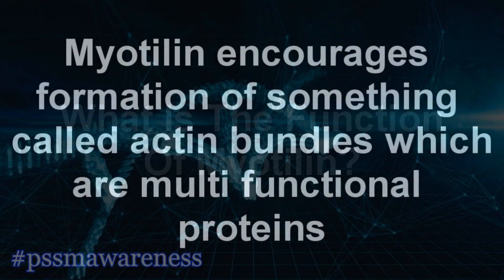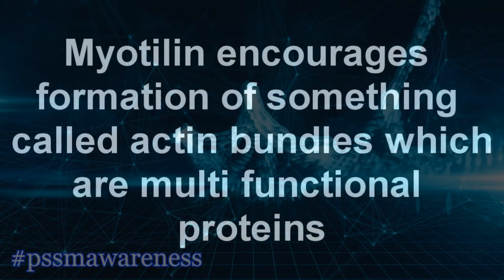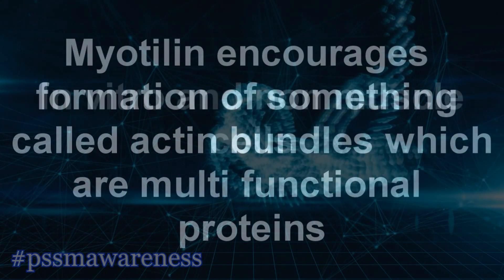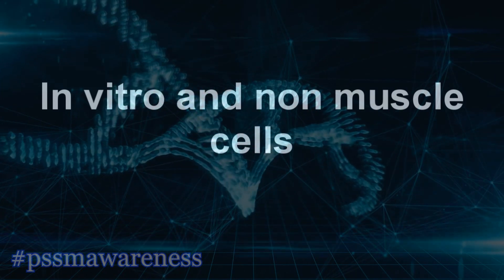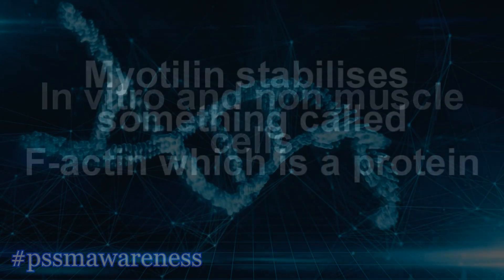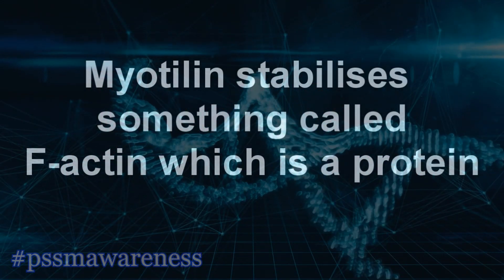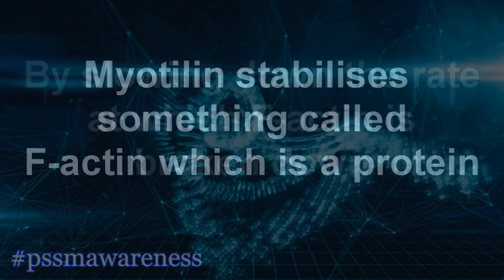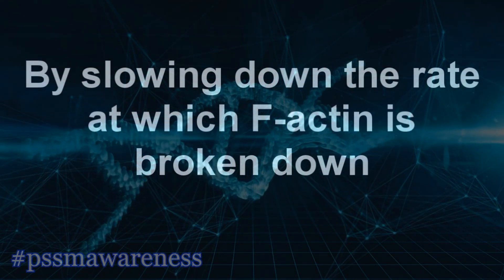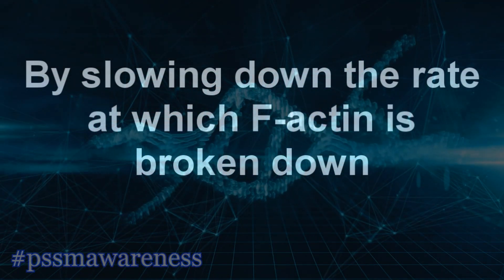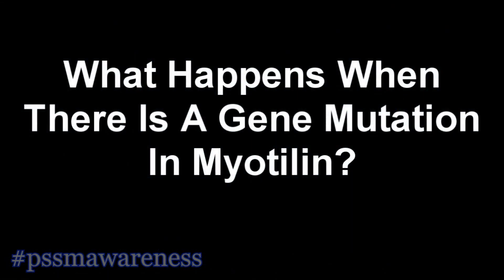What is the function of myotillin? Myotillin encourages formation of something called actin bundles, which are multifunctional proteins, in vitro and non-muscle cells. Myotillin also stabilizes something called F-actin, which is a protein, by slowing down the rate at which F-actin is broken down.